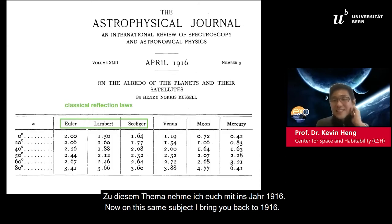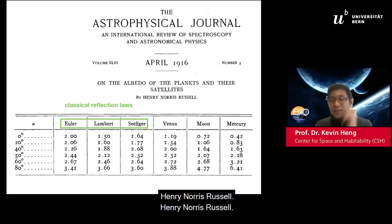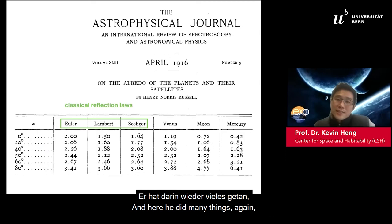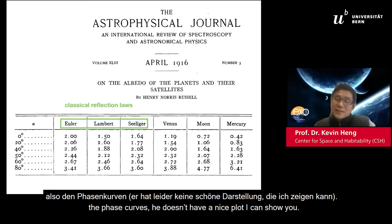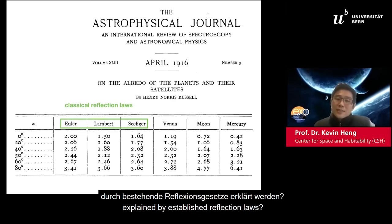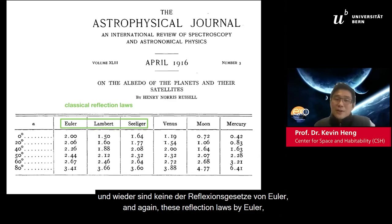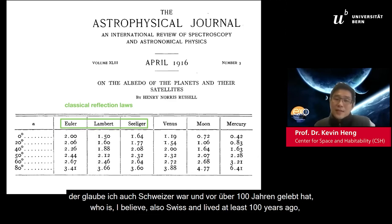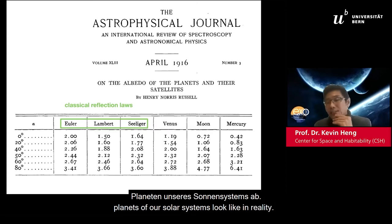On this same subject, I bring you back to 1916 — a very old paper by a famous American astronomer called Henry Norris Russell. He took measurements of Venus, Moon, and Mercury — their phase curves — and asked whether this data can be explained by well-established reflection laws. The short answer is no. These reflection laws by Euler — who I believe is also Swiss — Lambert, and Seliger: none of these idealized reflection laws look like what the moons and planets of our solar system look like in reality.